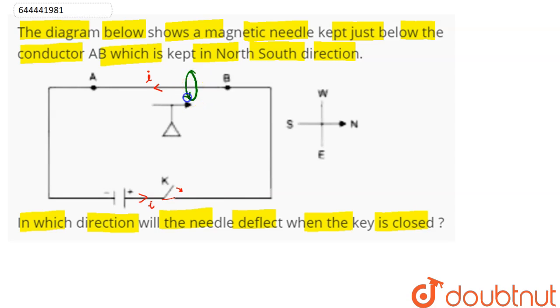...will be directed towards east, that is from west to east. Hence we can say here current flows from B to A, and the magnetic field corresponding to the straight conductor is directed from west to east.